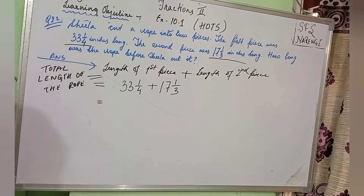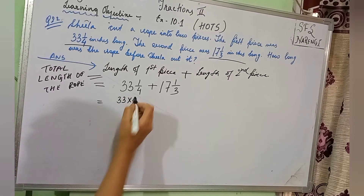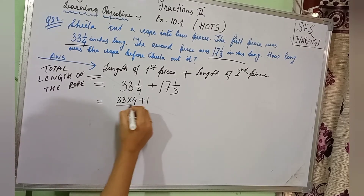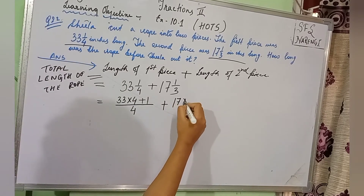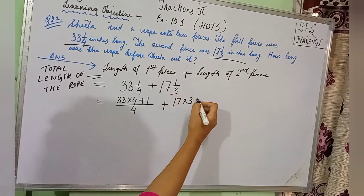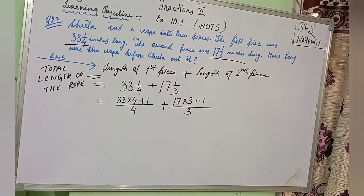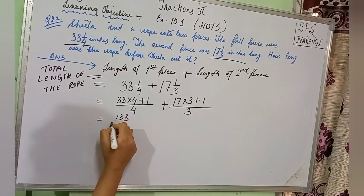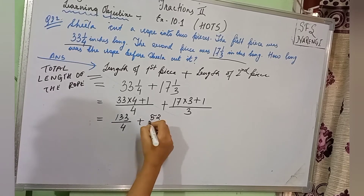Now these are mixed fractions — you have to convert them into improper fractions. Whole number multiplied by denominator plus numerator, divided by the denominator. So this will be 33 multiplied by 4 plus 1, divided by 4, plus 17 multiplied by 3 plus 1, divided by 3. Pause the video, children, and calculate this. Once you calculate, you will get 133/4 plus 52/3.